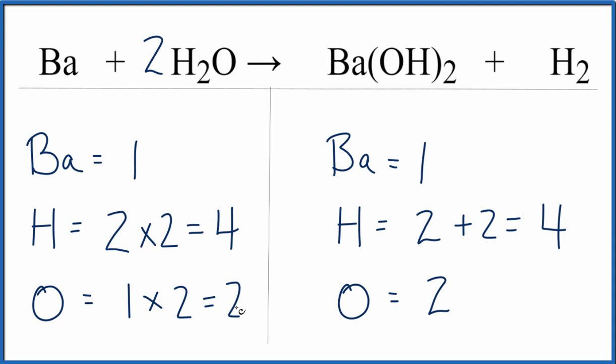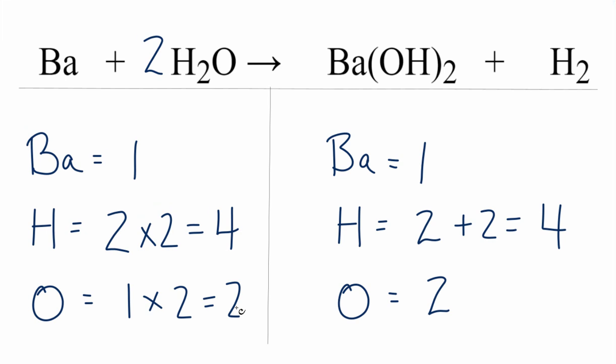Everything on the reactant side and the product side, we have the same numbers. We're obeying the law of conservation of mass. That's the balanced equation for Ba plus H2O. It's Ba(OH)2 plus H2. This is Dr. B and thanks for watching.